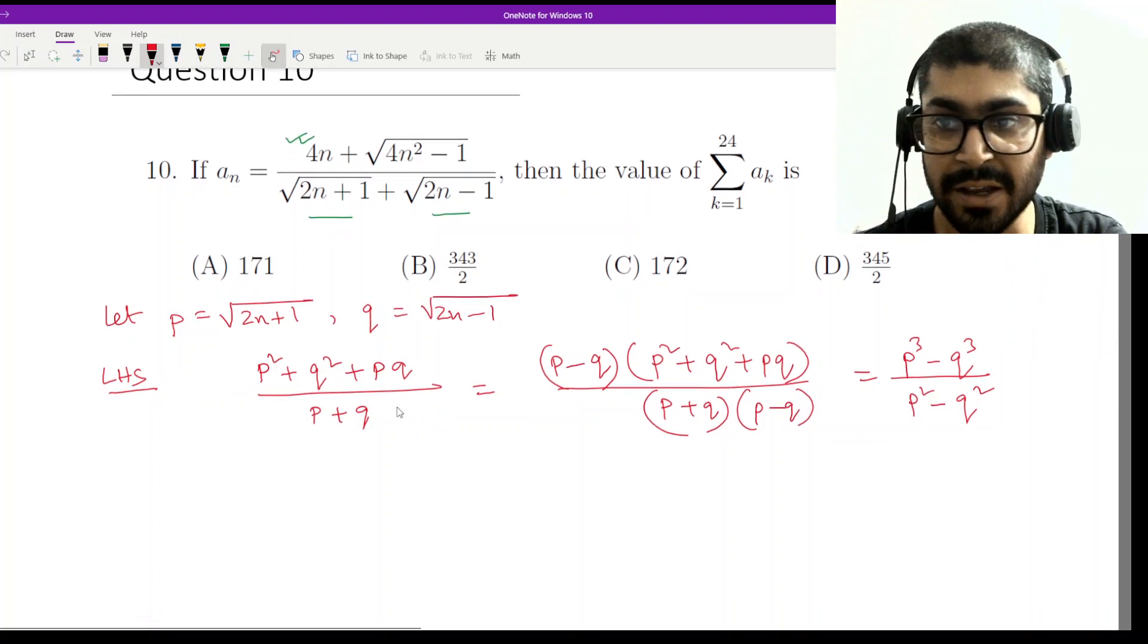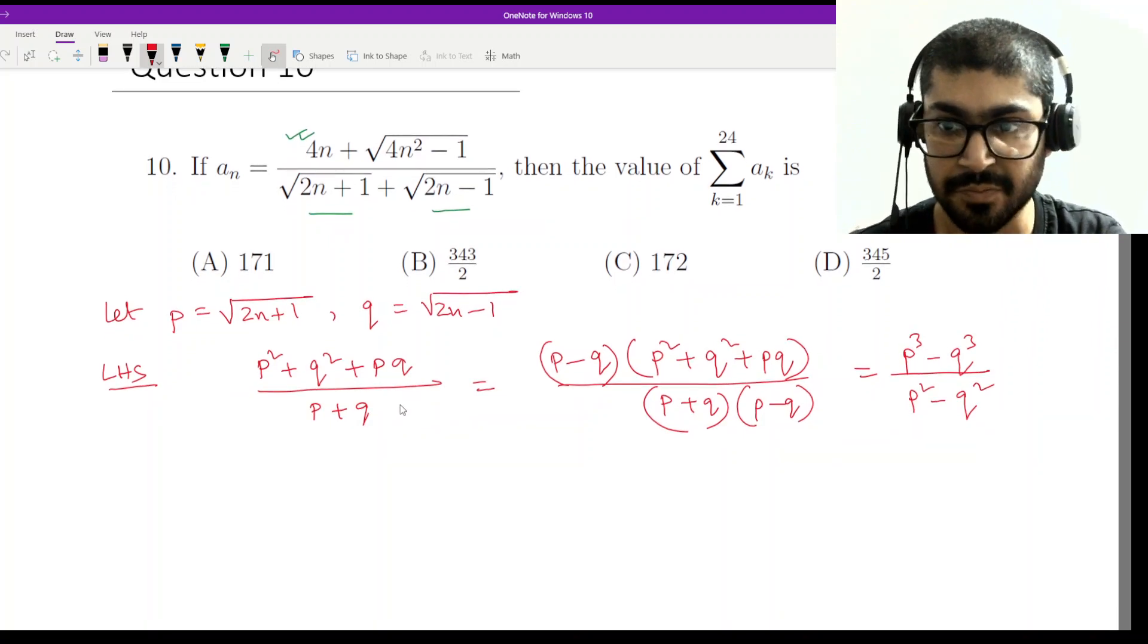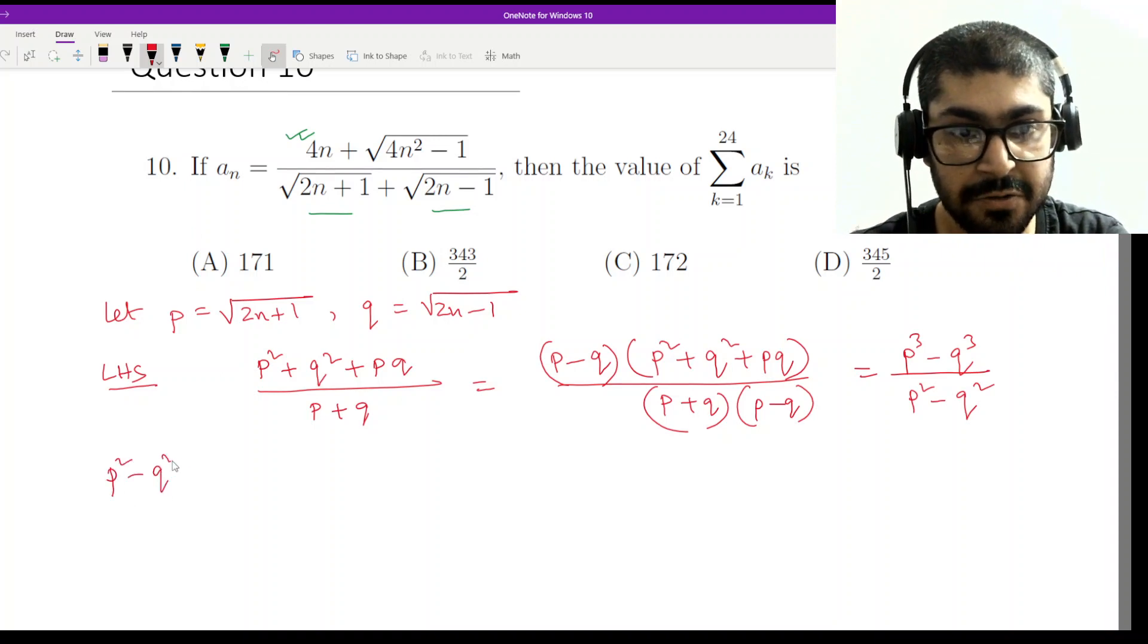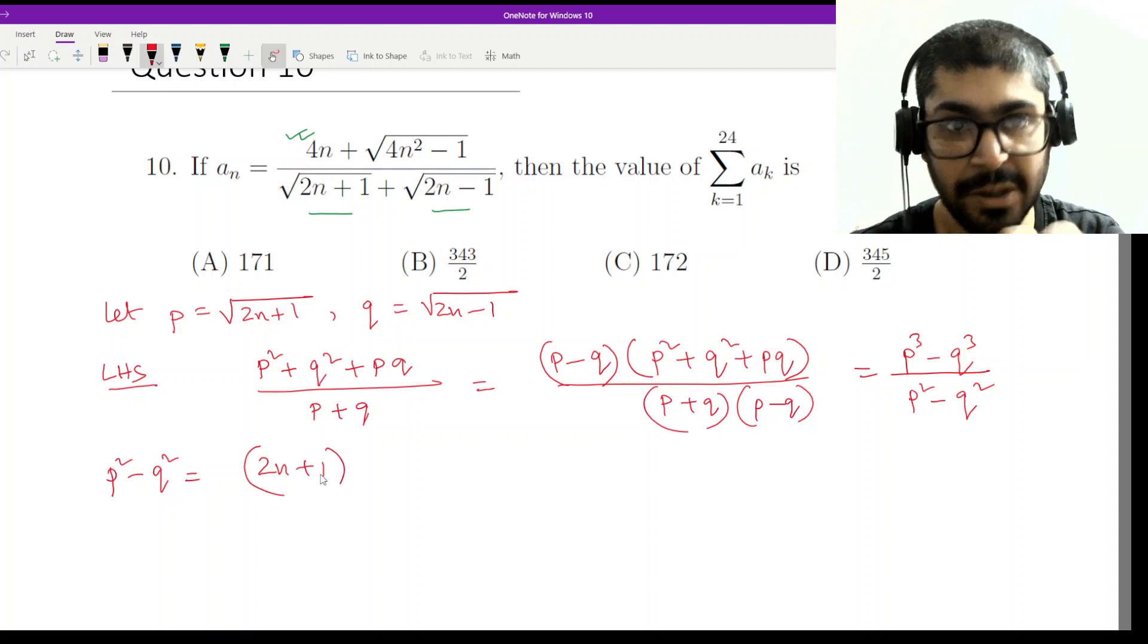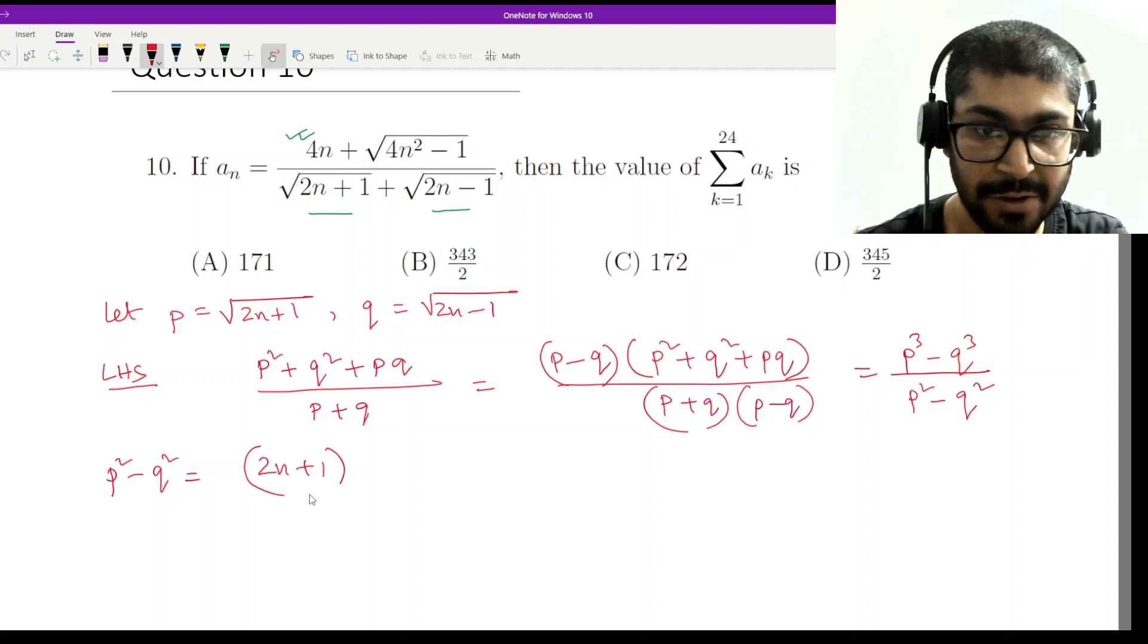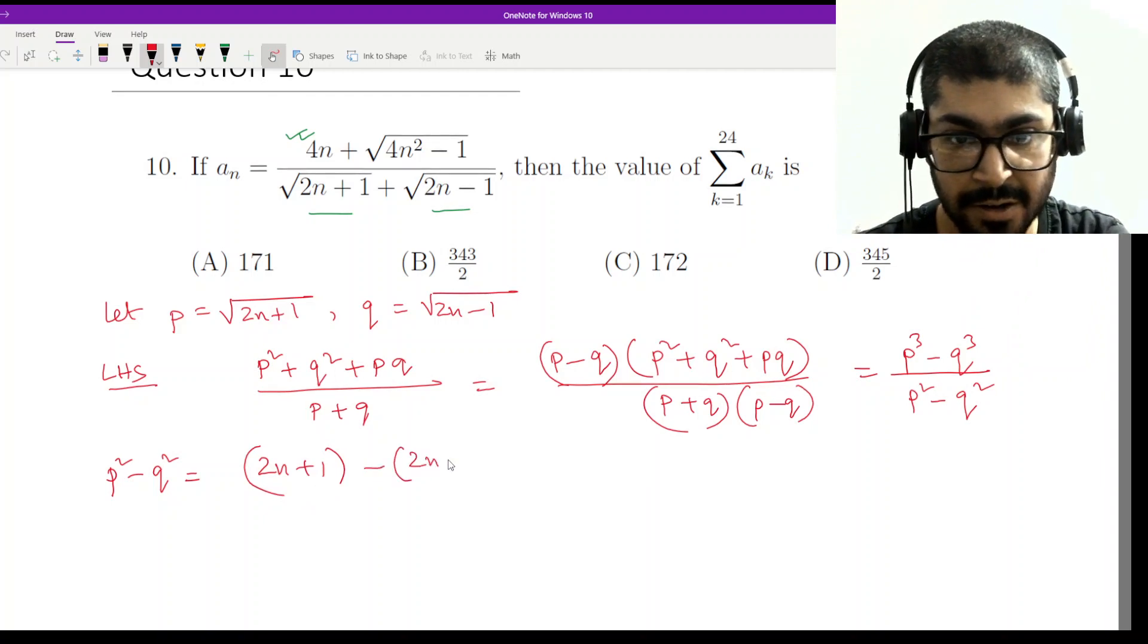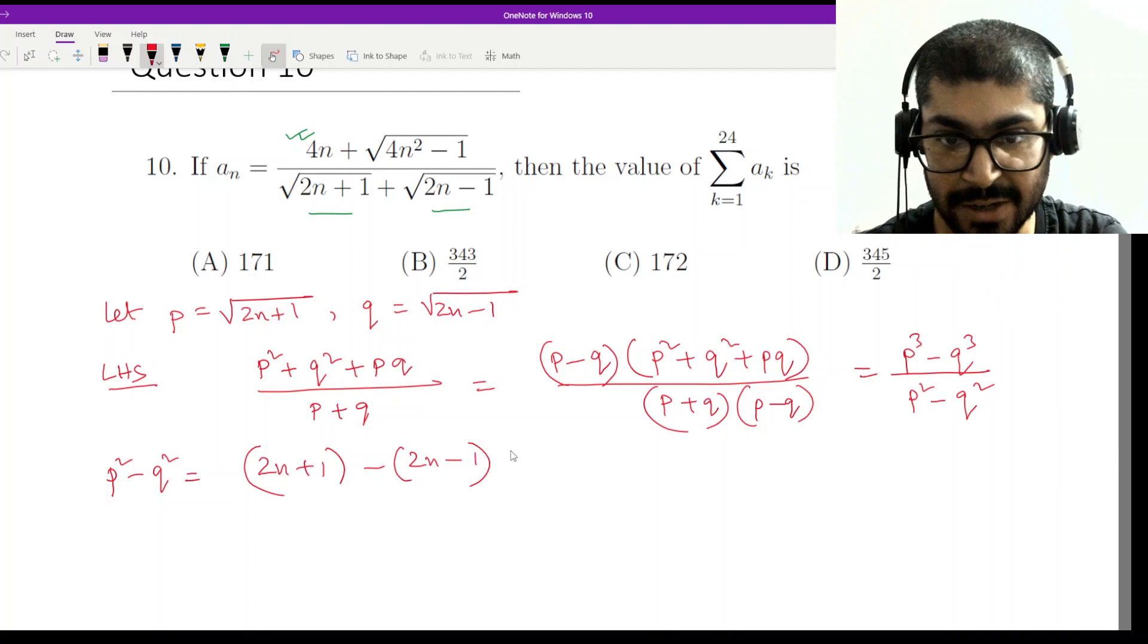The numerator becomes p cube minus q cube. Hopefully you remember that formula and the denominator becomes p square minus q square. Now what would be p cube minus q cube? Before that let us calculate what would be p square minus q square. p square minus q square would be 2n plus 1, because p was root over 2n plus 1 so p square would be 2n plus 1 and q was root over 2n minus 1 so similarly q square would be 2n minus 1. So if I subtract it I will get 2.